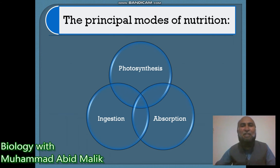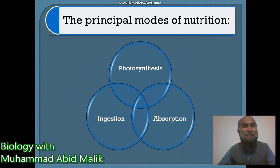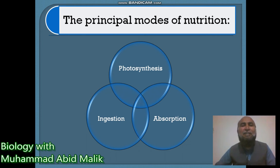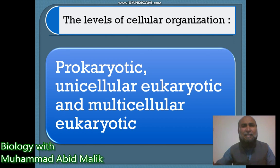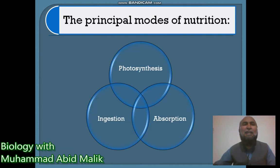Secondly, the principal modes of nutrition. According to Robert Whittaker, he proposed principal modes of nutrition for the Five Kingdom Classification as the second basis. Organisms were classified on the basis of photosynthesis — a process occurring in plants; absorption — a mode of nutrition seen in fungi-type organisms; and ingestion — seen in multicellular organisms like humans, birds, and other animals. Those are the two points: level of cellular organization and principal modes of nutrition.